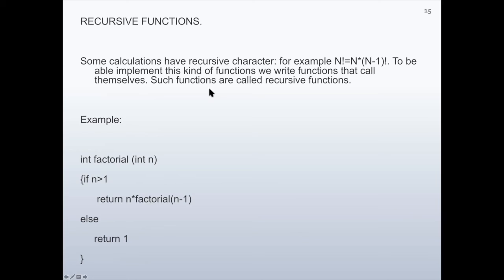An example is the recursive factorial. The function is named 'factorial', with parameter integer n, and it returns an integer result — the factorial of n. The code is: if n is greater than 1, return n multiplied by factorial(n-1). Notice that inside the function factorial, there is a call to the function factorial itself, with parameter value n-1.